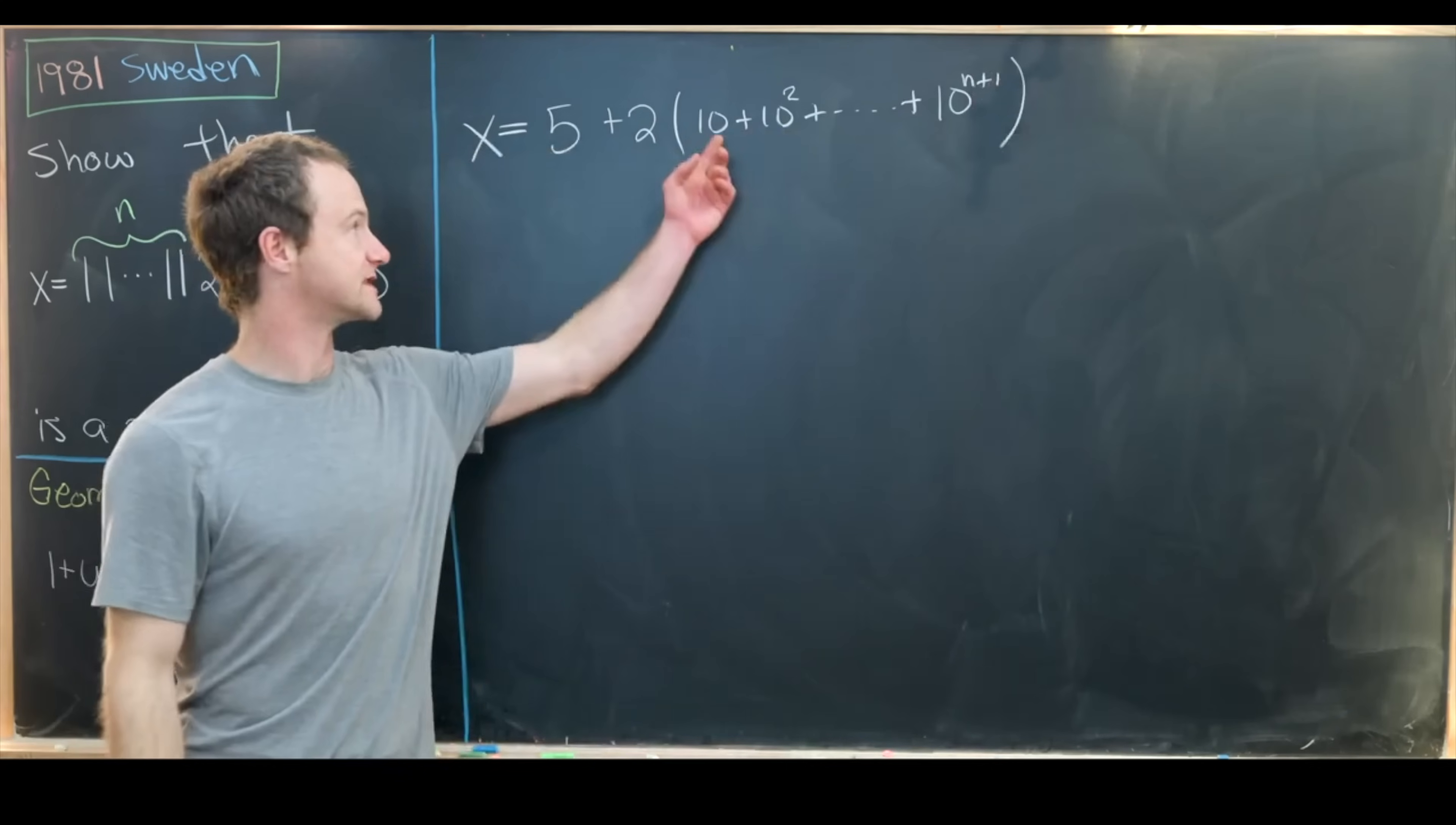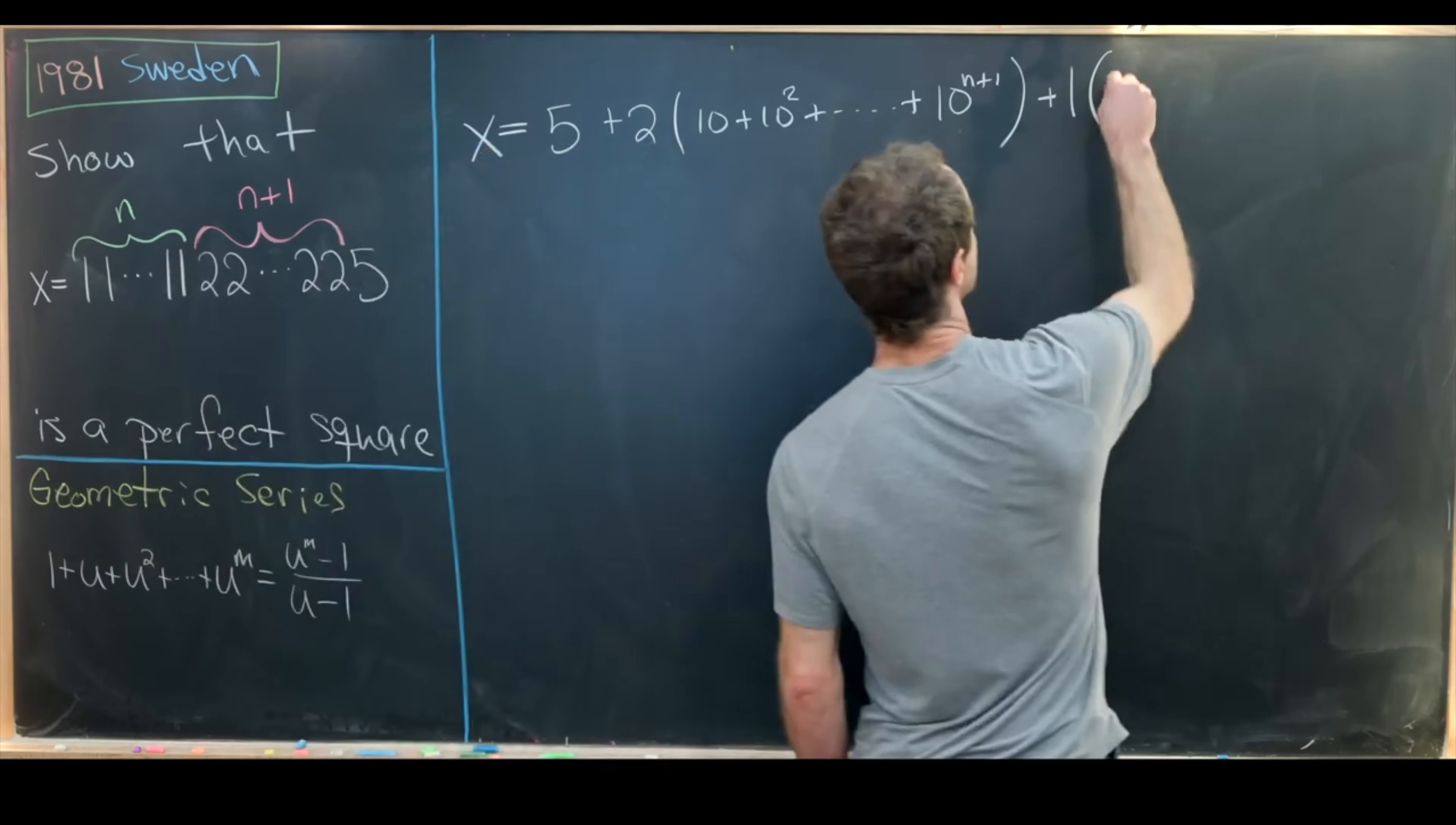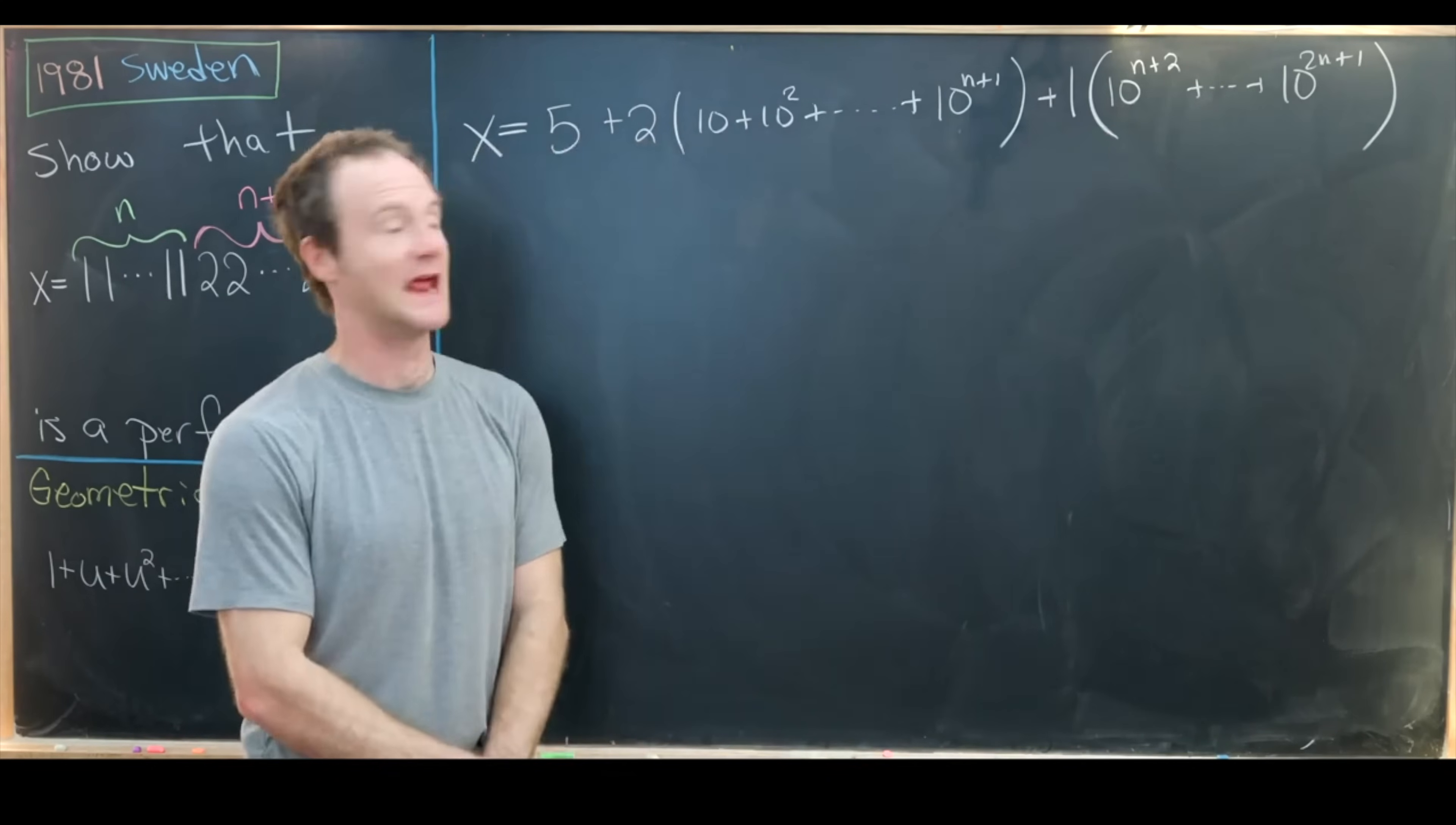Okay, so notice that's going to be n+1 total digits that are equal to 2 and they start at the tens digit. Then we're going to have a bunch of digits that are equal to 1. So how many of those will we have? Well, we have n digits equal to 1. Those start at 10^(n+2) and so that means they must end at 10^(2n+1). So notice that gives us a total of n+1 digits that are equal to 1 at the end.